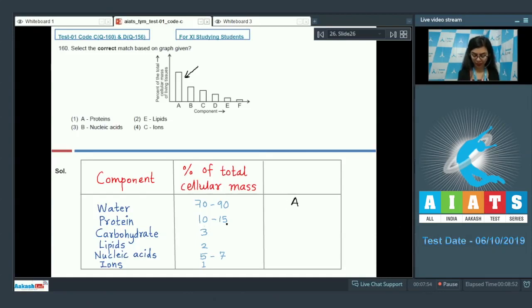Protein is second highest. That would be B. C would be nucleic acid because it's more 5 to 7%. That would be C. D, E, N, F. So on. So let's look at the options now. A represents proteins. That's incorrect. A represents water.